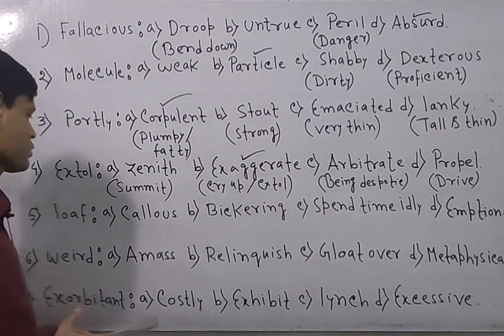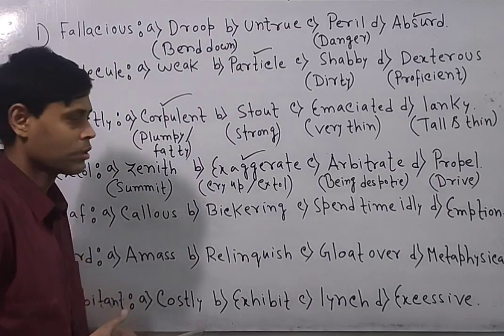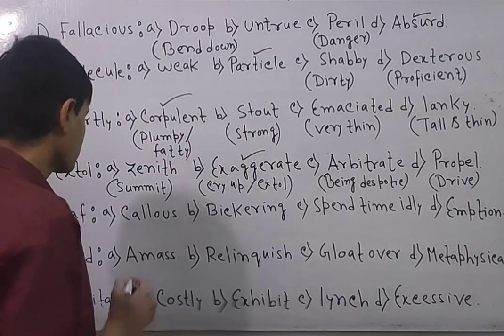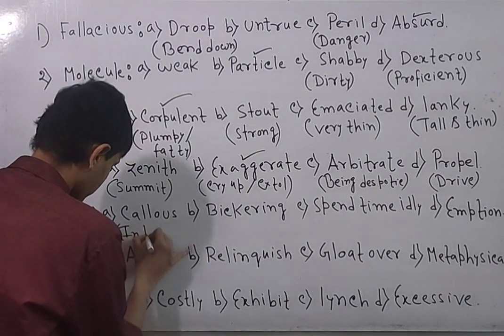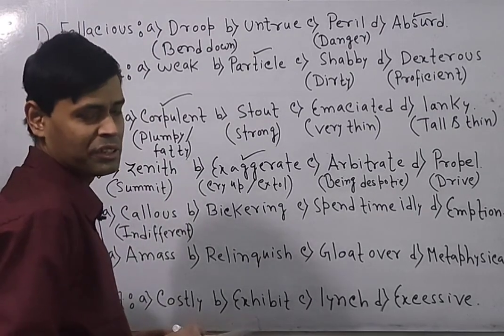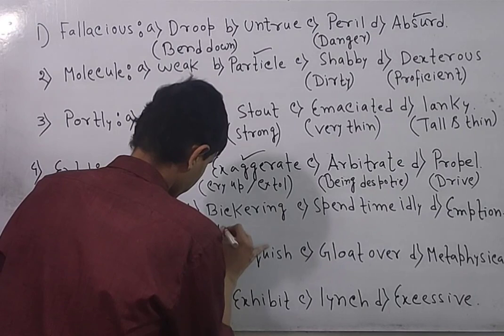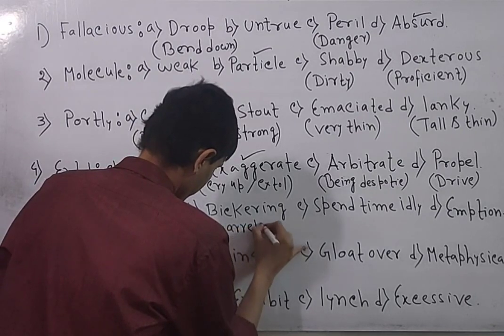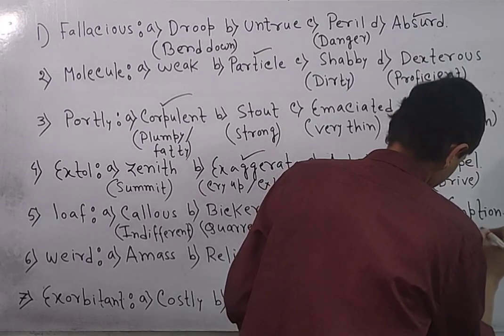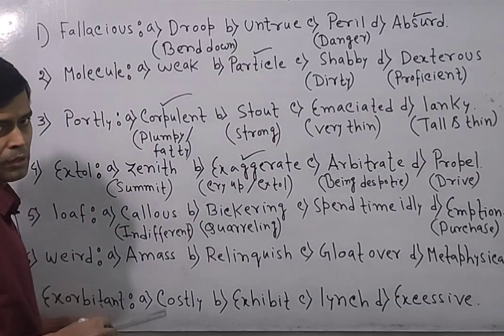Now look through the next question. Loaf. There are four options: callous, bickering, spend time idly, emption. Callous means indifferent, not serious at all. Bickering means quarreling. Spending, spend time idly means lazily. Emption means purchase. So callous means indifferent. Bickering means quarreling or exchanging hot words. Emption means purchase. So loaf means spend time idly. That is called loafing or loaf.